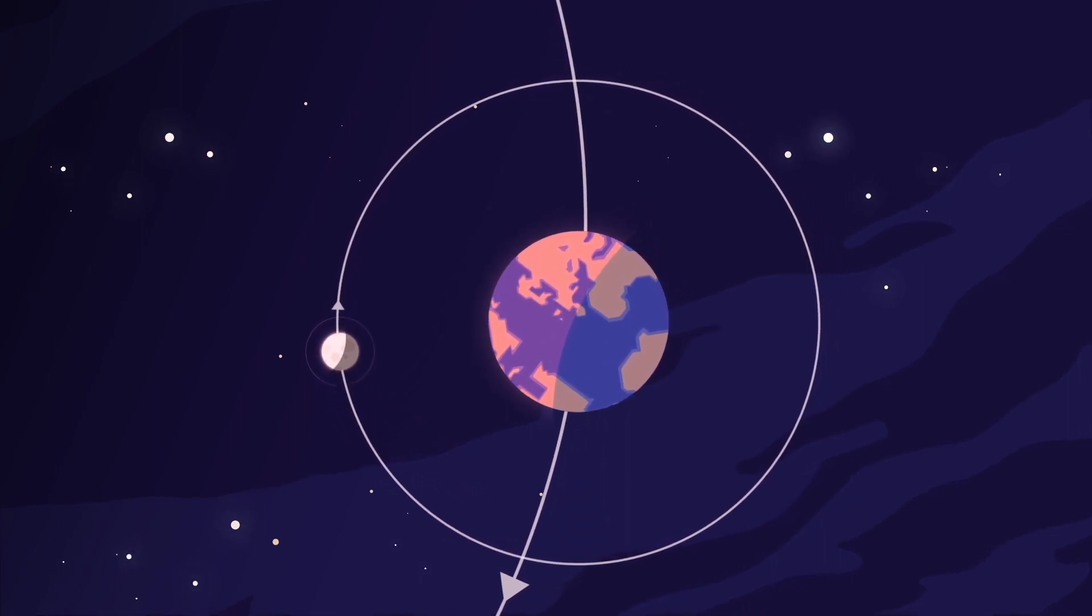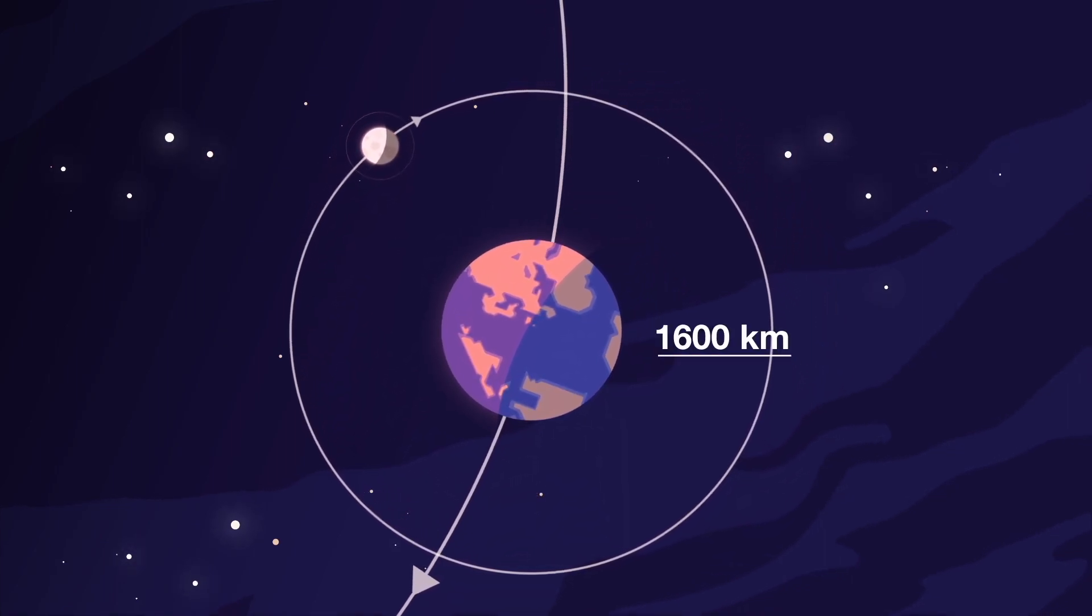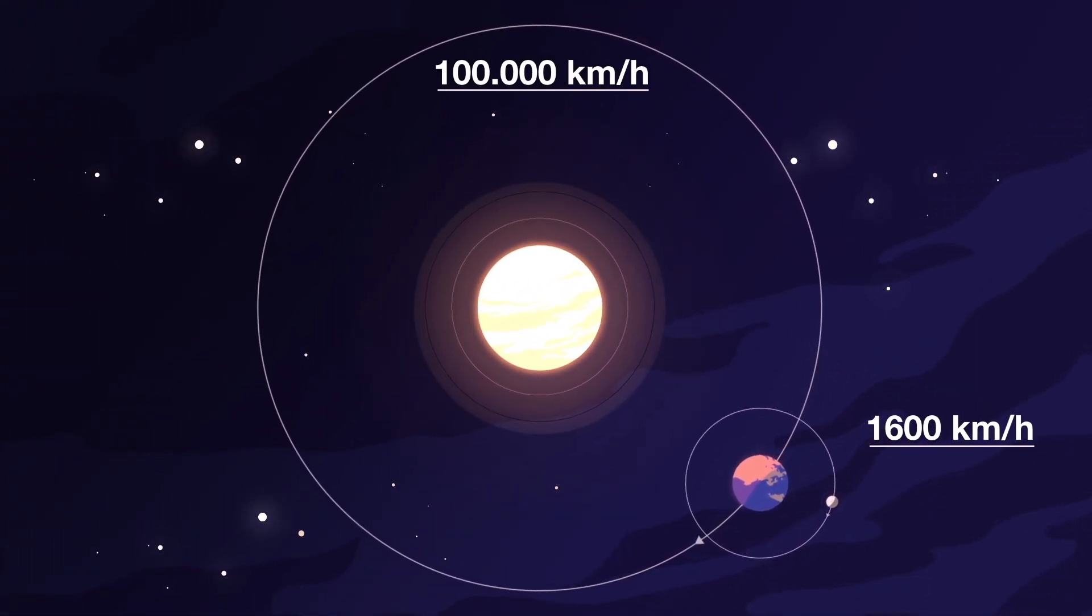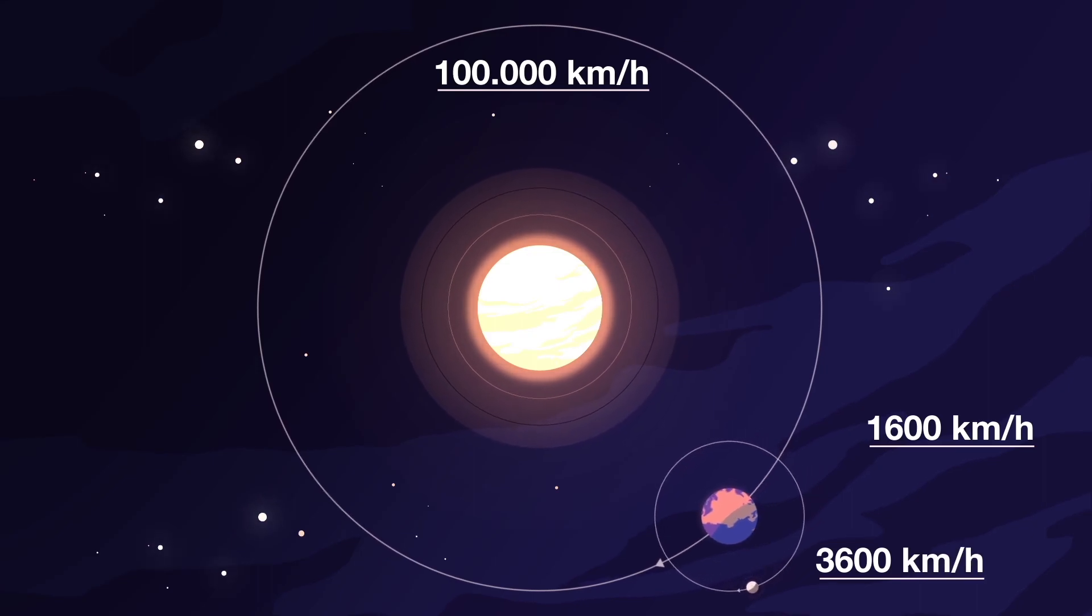Right now, Earth is spinning at 1600 km per hour and moving around the Sun at more than 100,000 km per hour. And the Moon is orbiting us again.